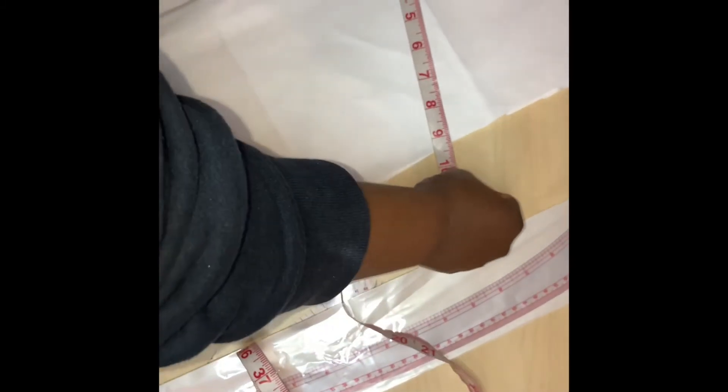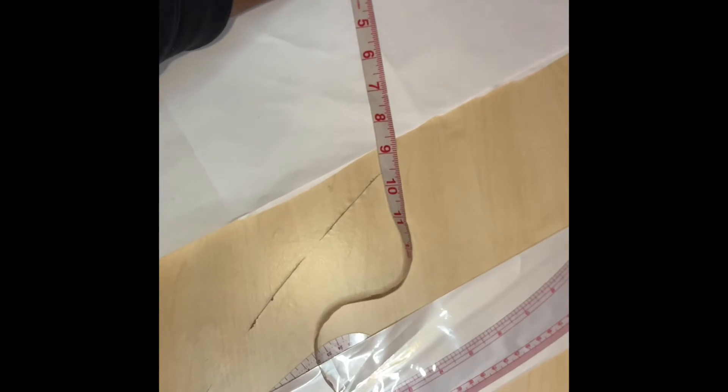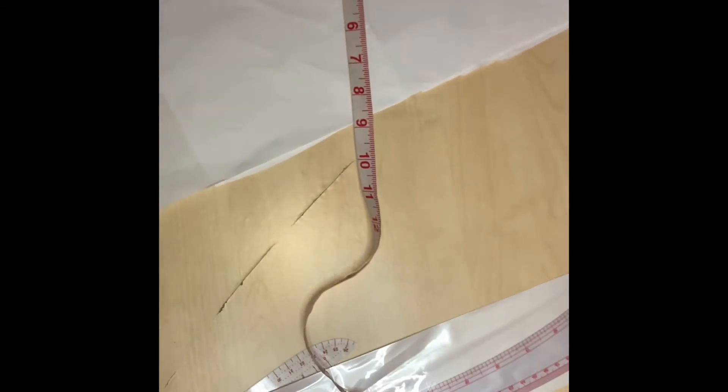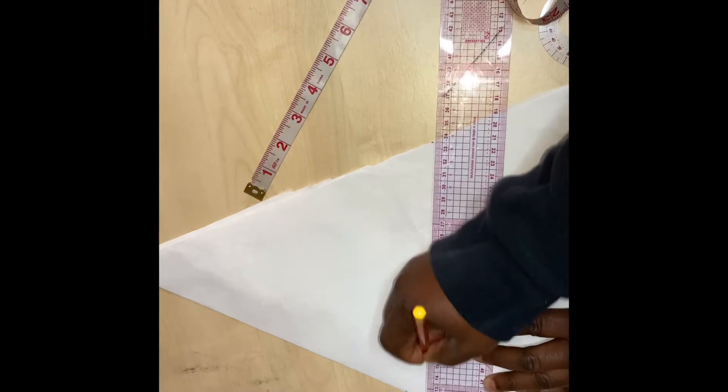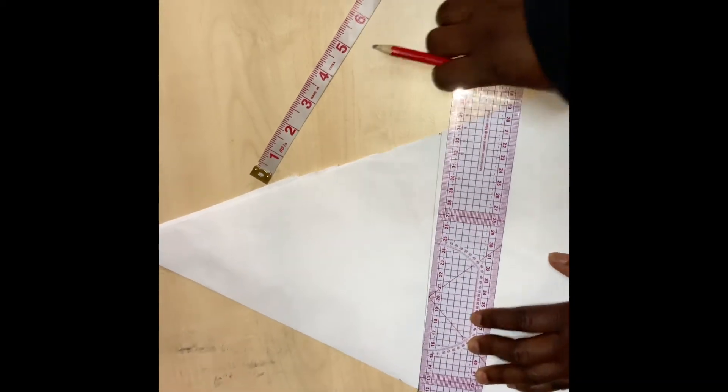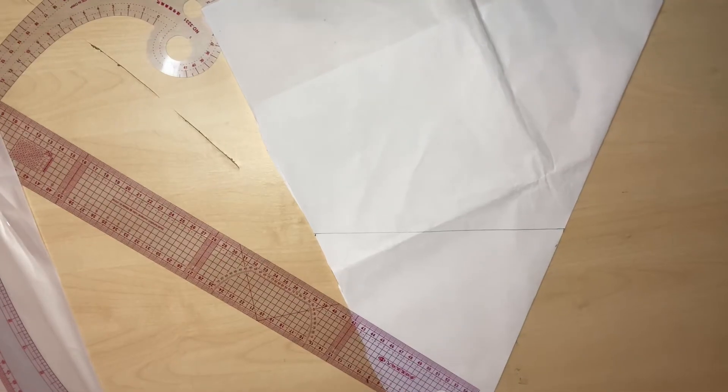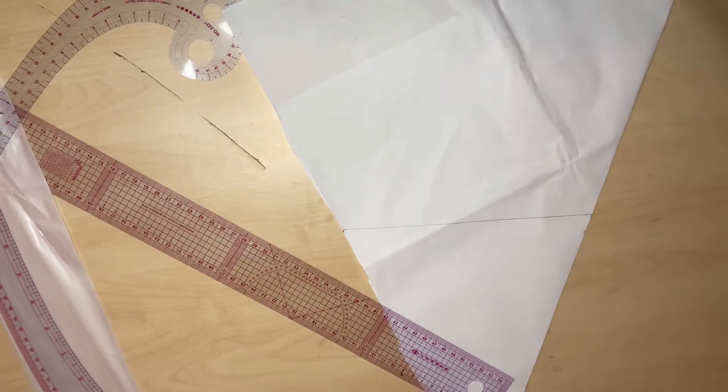So this is your 8.5 inches here. You will make a straight line across it. This is the 8.5 for the ham. Now the next thing for us is to get our cup height.